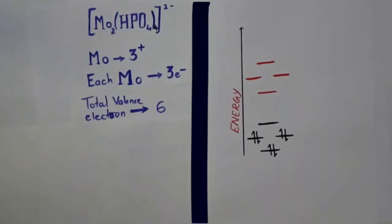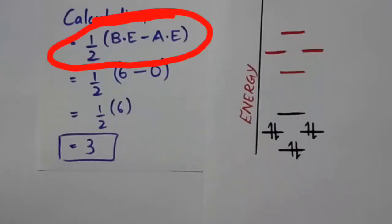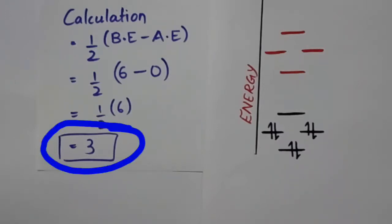The total bonding electrons are 6. Anti-bonding electrons are 0. Calculation: half of bonding electrons minus anti-bonding electrons, and the bond order that we will get is 3.